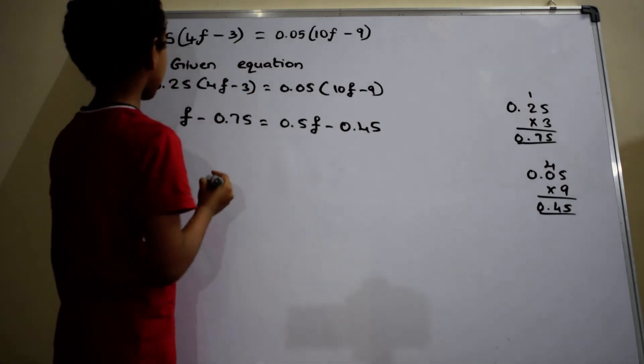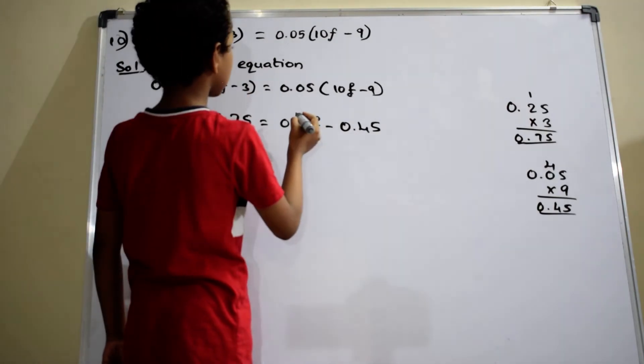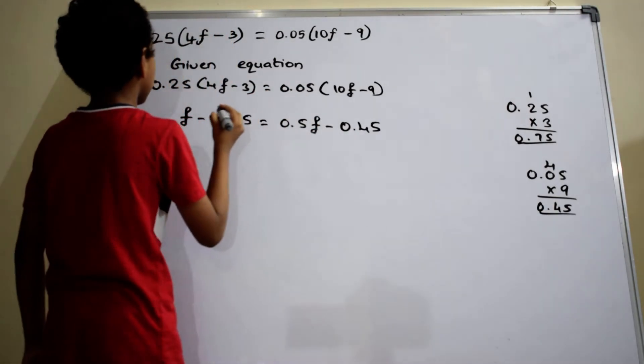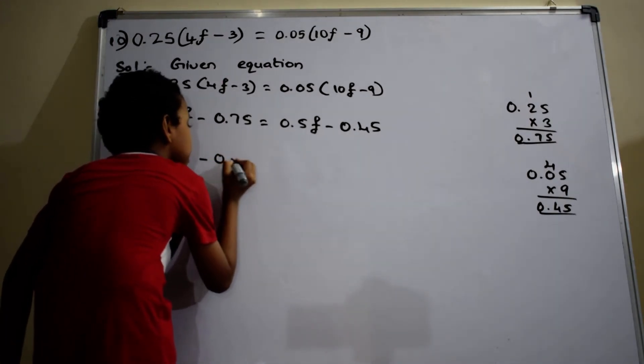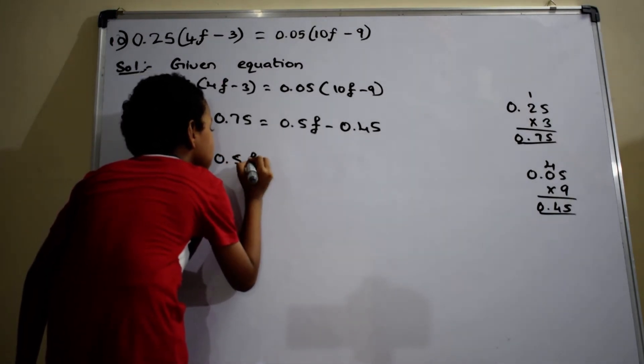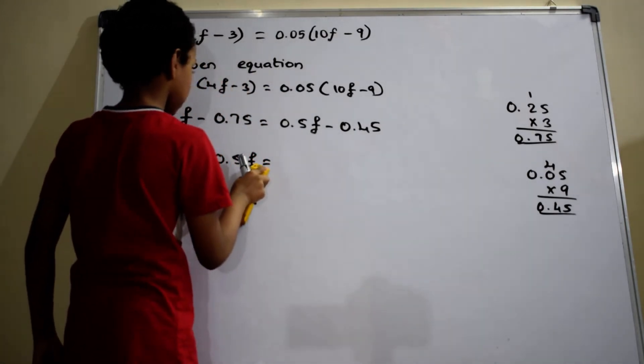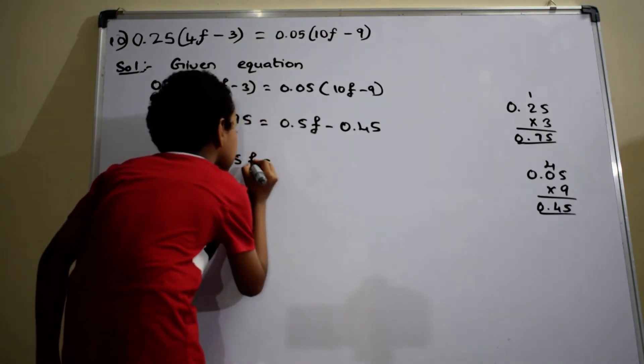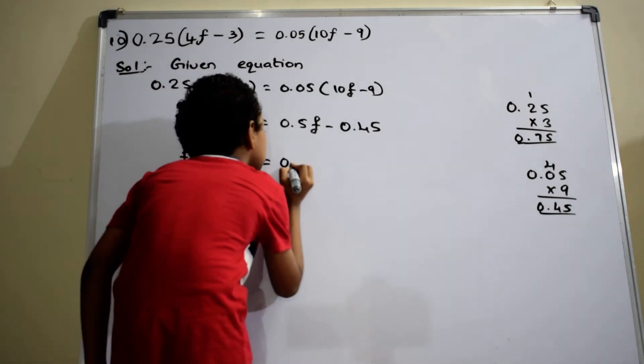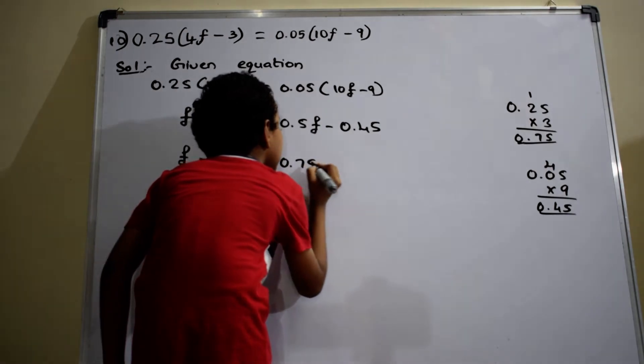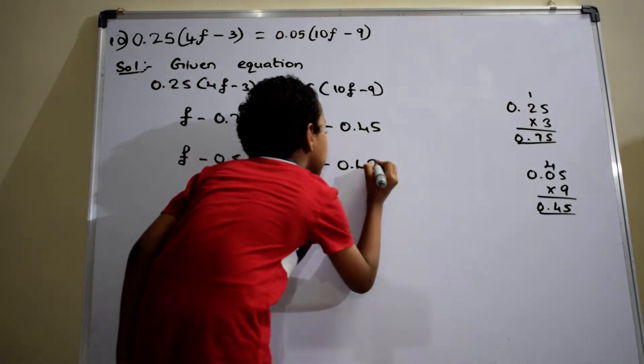In this way, I am transposing this 0.75 to right-hand side and this 0.5f to left-hand side. Then, it becomes f minus 0.5f equals to 0.75 minus 0.45.